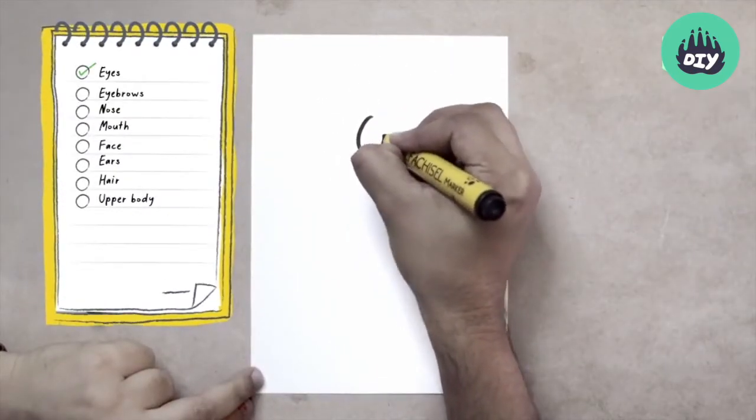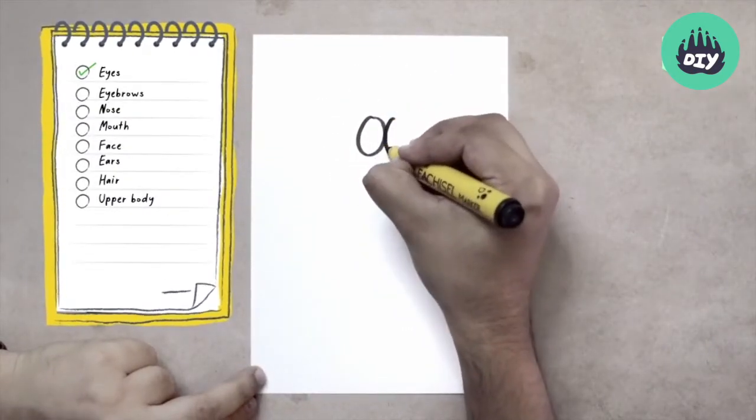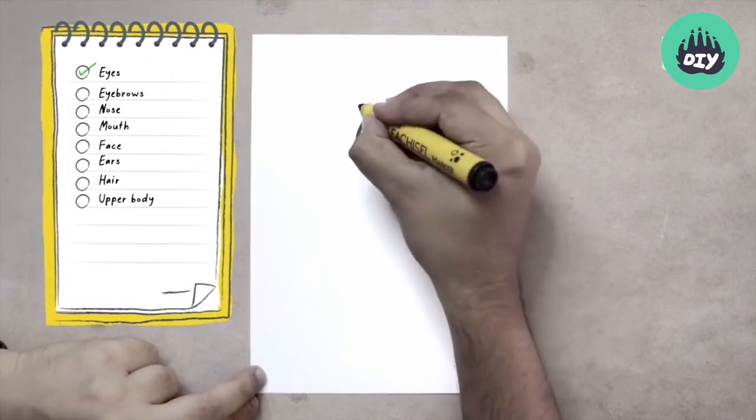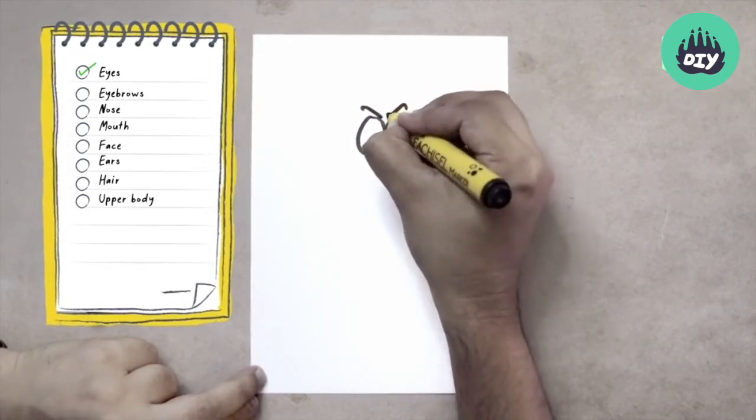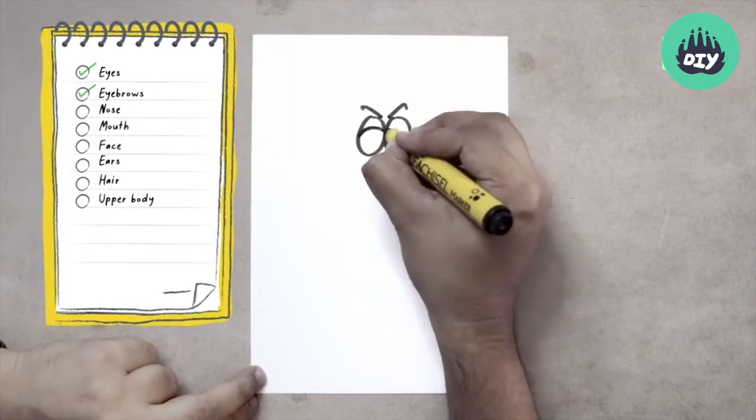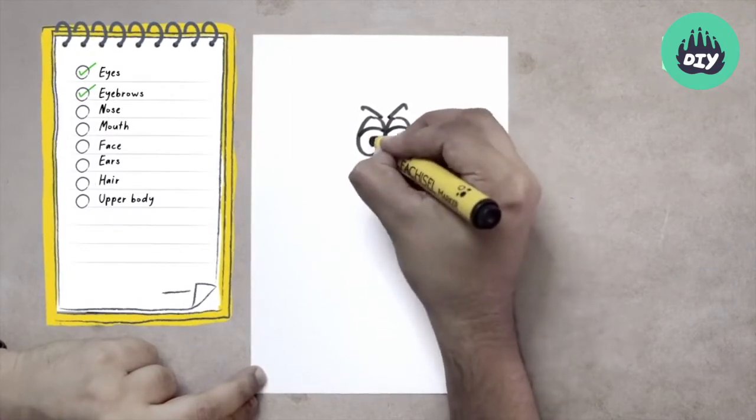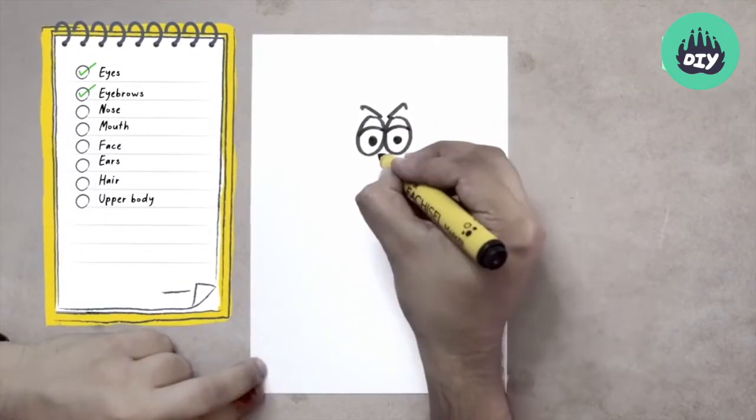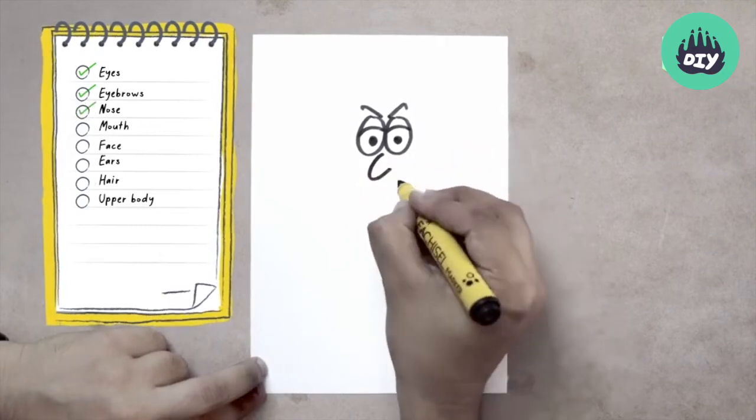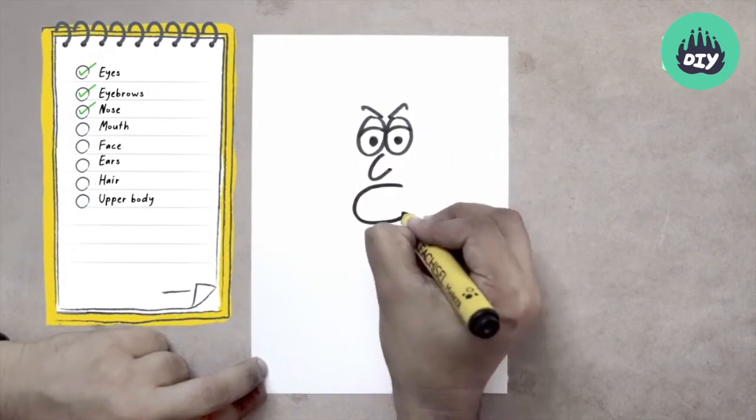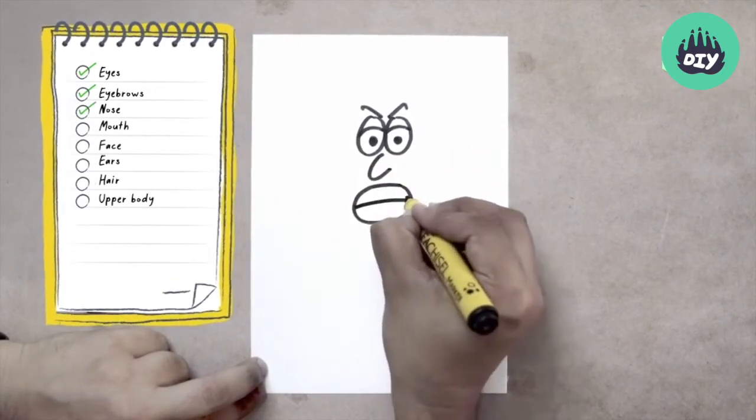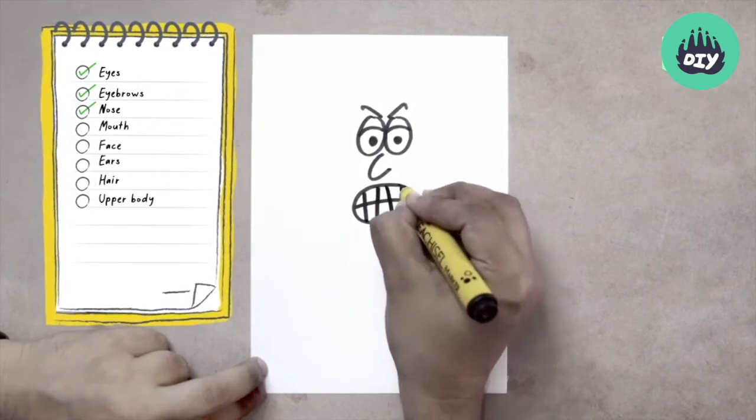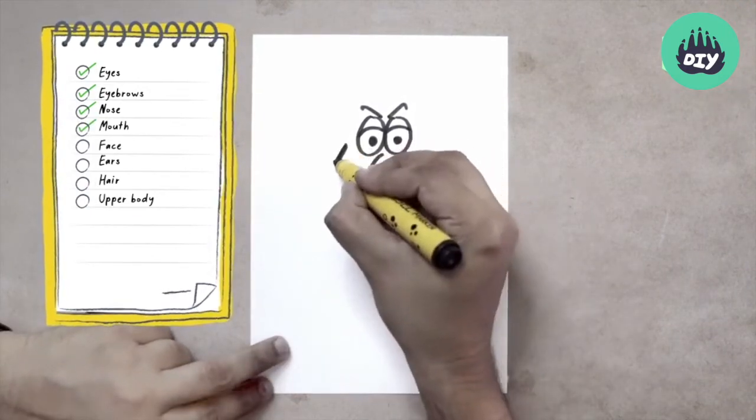We start with the eyes, two circles. The eyebrows are going to be very close to each other. Eye, eyelids, eyeballs, nose, and the mouth is going to be open, showing clenching of teeth for our angry expression.